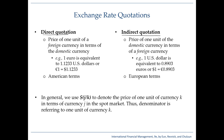The direct quote is the price of one unit of foreign currency in terms of the domestic currency. Just as an American consumer would say one iPad is priced at $400, or the price of one loaf of bread is $5, you're saying that one euro is equivalent to 1.1233 US dollars. So you're expressing the price of foreign currency in terms of your own domestic currency. We also call this American terms.